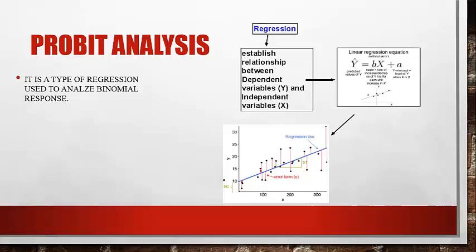This analysis establishes a relationship between two variables: dependent variables and independent variables. The dependent variable is the result of the experiment and is plotted on the y-axis. For example, if you want to find out the effects of sample concentration on percent mortality of cancer cells, the concentration conditions — temperature, pressure, and other factors — are the independent variables.